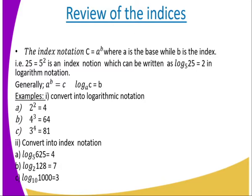When we talk about index notation, there is something we refer to as index notation. It is written as: C is equal to A raised to power B, where A is the base and B is the index. For example, 25 equals 5 squared — here 5 is the base and 2 is the index.